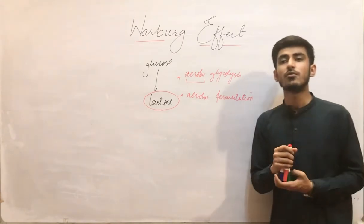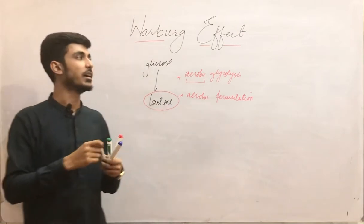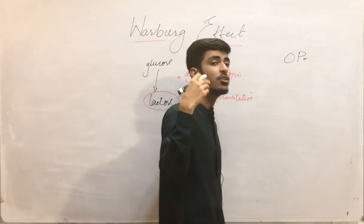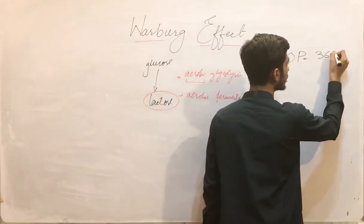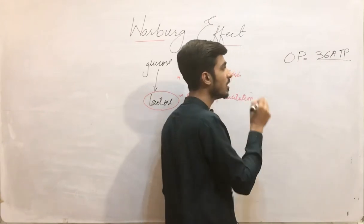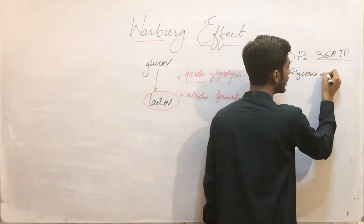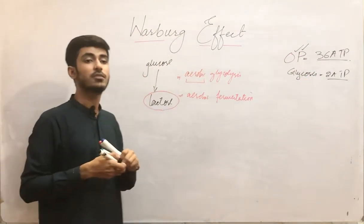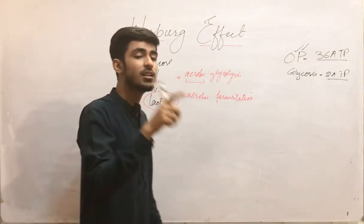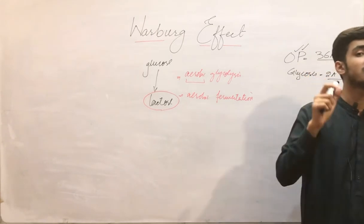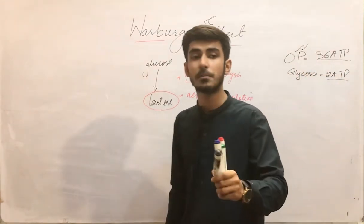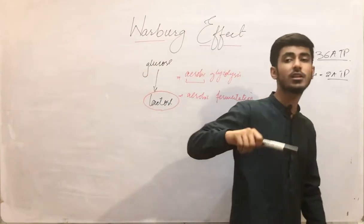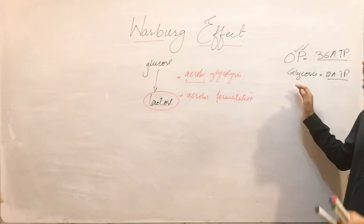Normally in our cells, if having plenty of oxygen supply, they prefer to carry out oxidative phosphorylation. Why? Because the main objective of the cell is to produce ATP, and oxidative phosphorylation gives 36 ATP to the cell, while glycolysis gives only 2 ATP. So obviously the cell will prefer oxidative phosphorylation. But in cancer cells and in rapidly growing cells — which are also normally present during embryological development — they prefer to carry out glycolysis, which produces only 2 ATP.